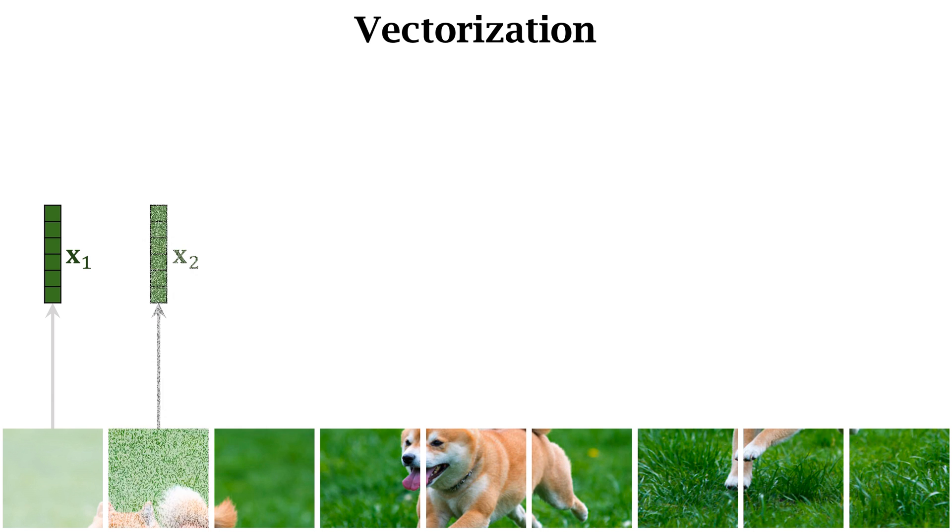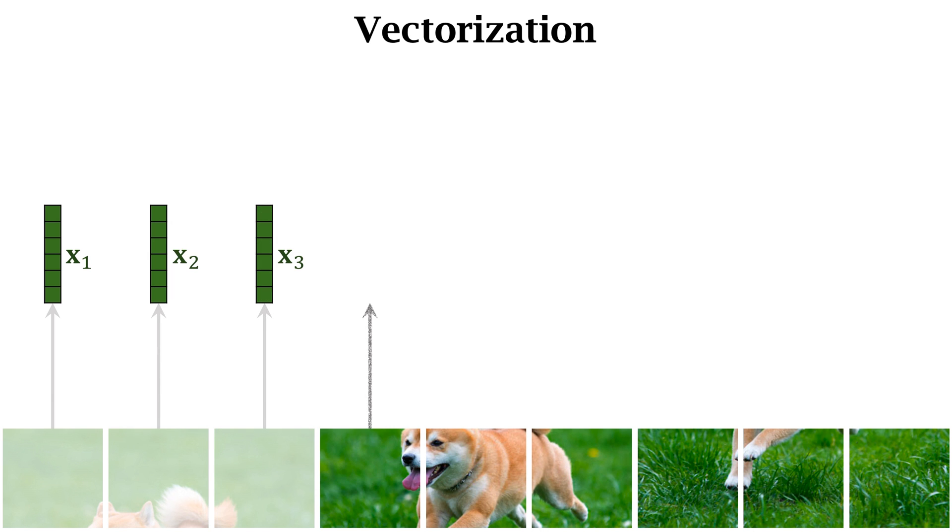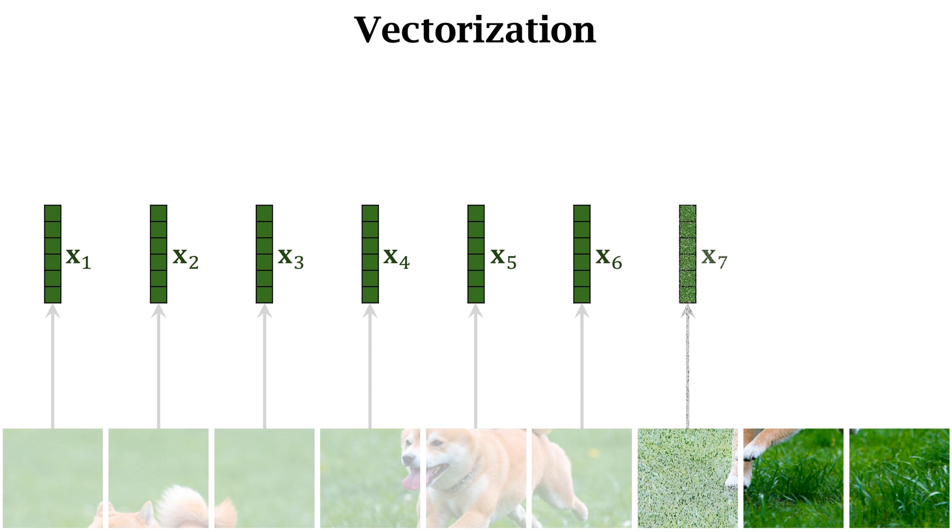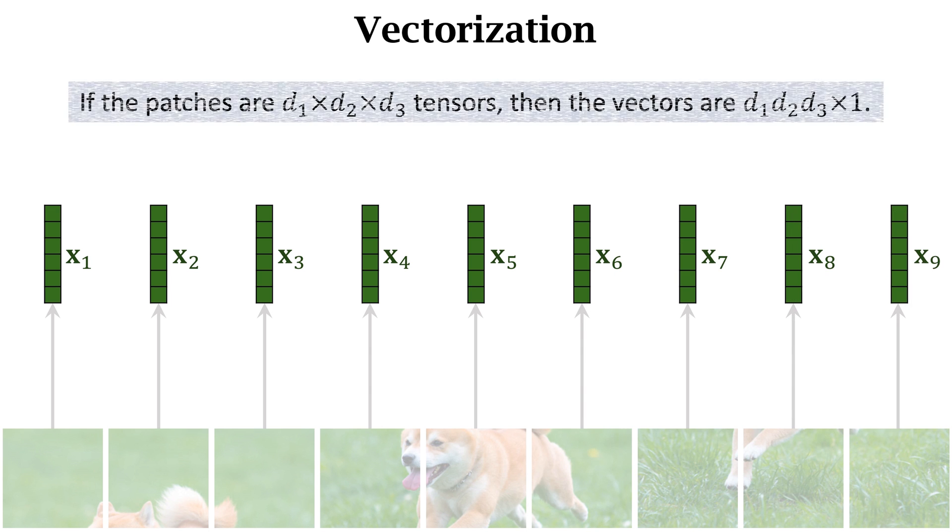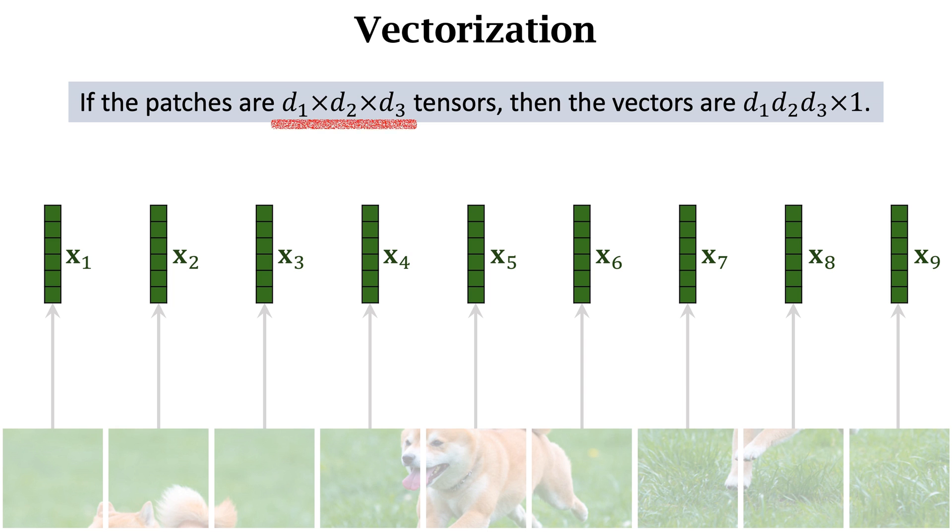Vectorization means reshaping a tensor into a vector. The 9 tensors are reshaped into 9 vectors. If the patches are d1 by d2 by d3 tensors, then the vectors are d1, d2, d3 dimensional vectors.